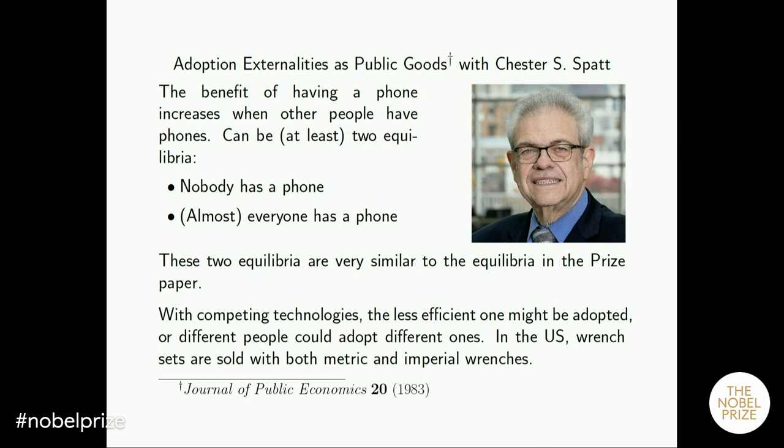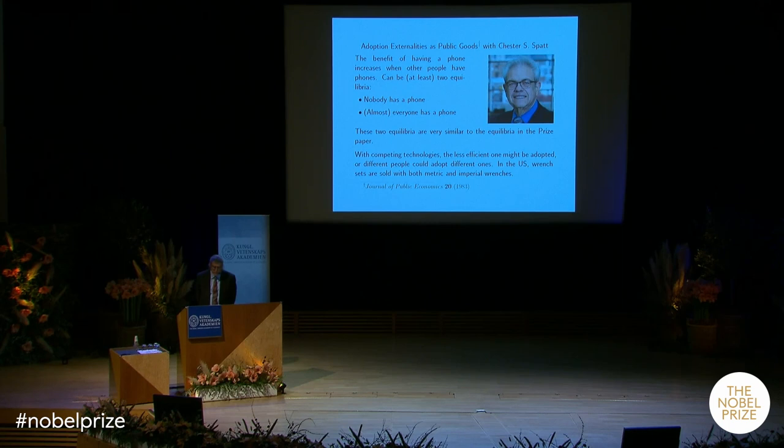The first is a paper called 'Adoption Externalities as Public Goods,' with Chester Spatt, my good buddy from graduate school. We thought about adoption of technology like telephones: whether you want a phone depends on who else has one. If everybody else has a phone, you probably want one too. If nobody has one, you don't want to pay for it. This is very similar to the bank runs model — everybody wants to do what everybody else is doing — and it influenced my thinking on the bank run paper.